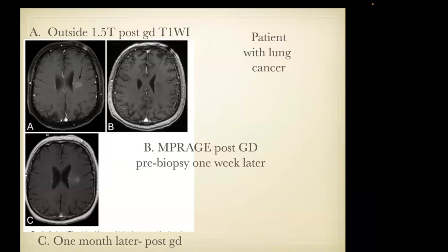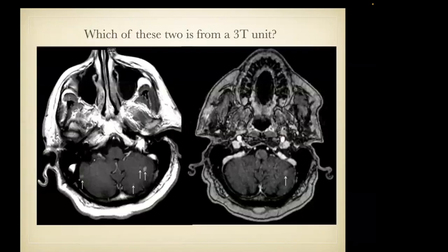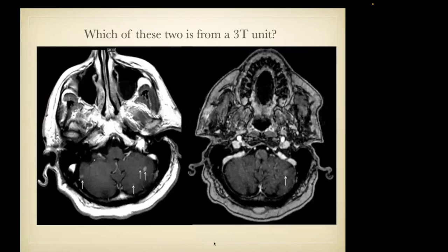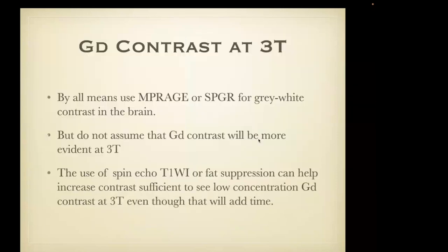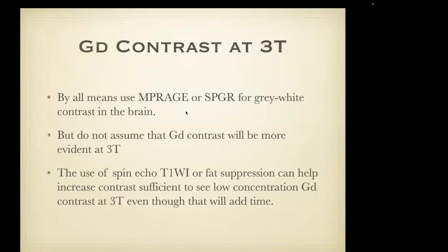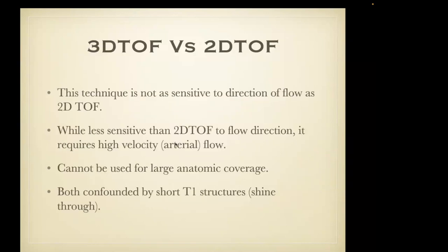When evaluating patients with brain tumors, my recommendation is to stick with standard T1 spin echo imaging and be careful about mixing imaging at 3 Tesla and 1.5 Tesla. Coming back to the idea of conspicuity: on MP-RAGE at 3 Tesla, it's hard to see an enhancing lesion compared to 1.5T T1-weighted imaging. The lesion is much less conspicuous on MP-RAGE compared to the T1 technique. By all means use MP-RAGE or SPGR for gray-white contrast, but don't assume that gadolinium contrast will be more apparent.